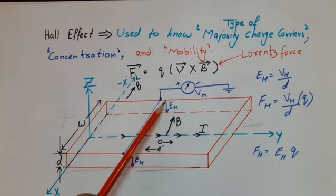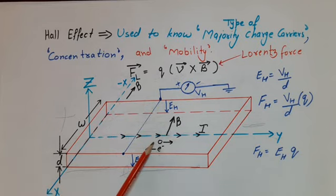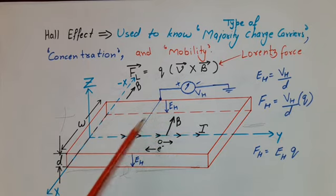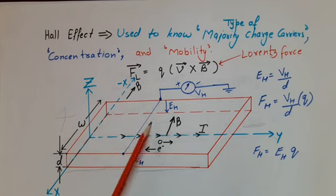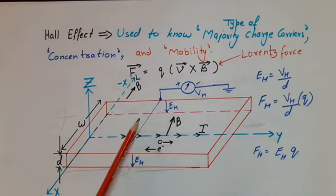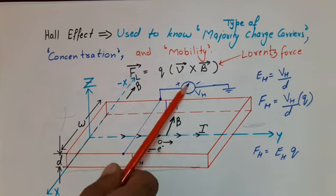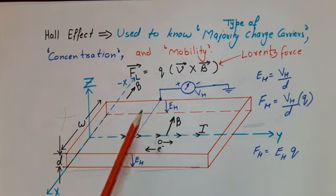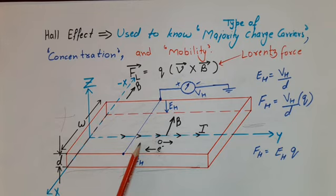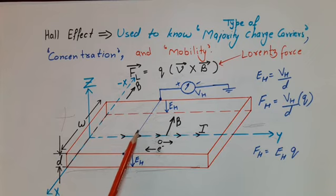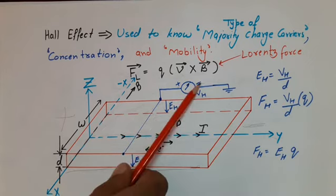What happens if the semiconductor is intrinsic? In that case, number of electrons and holes are the same, both experience upward force, and due to equal numbers there is no net charge on the upper surface — so the voltage shows zero deflection. But this is the ideal situation. Practically, since electron mobility is higher than hole mobility, electrons dominate on the upper surface, so the voltmeter reading will be slightly negative. In an exam, if zero volt is an option, mark zero; if not, mark negative voltage.